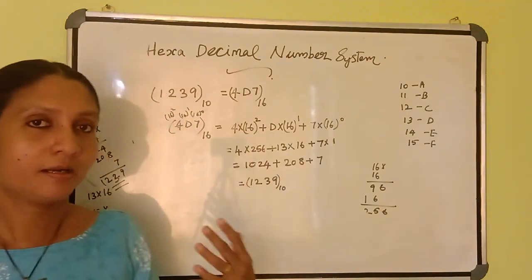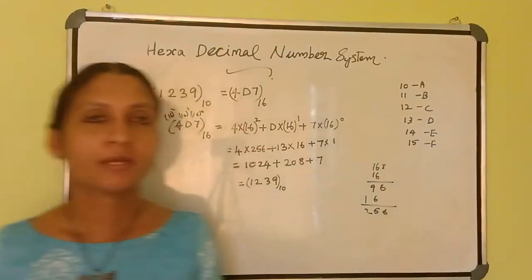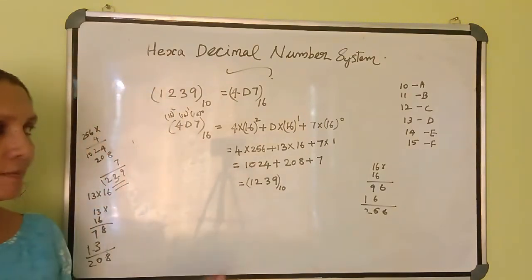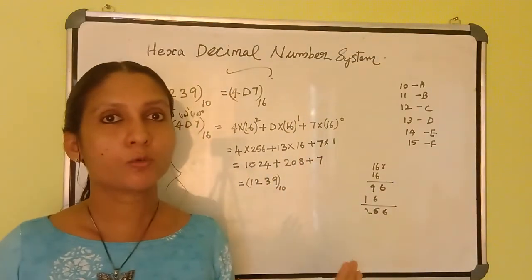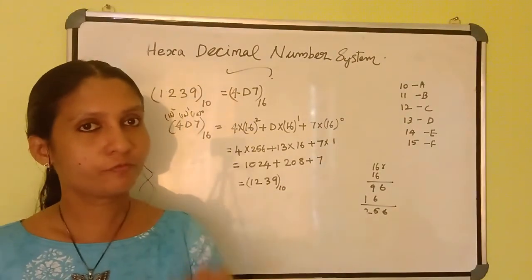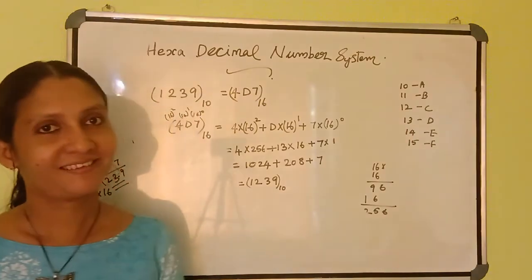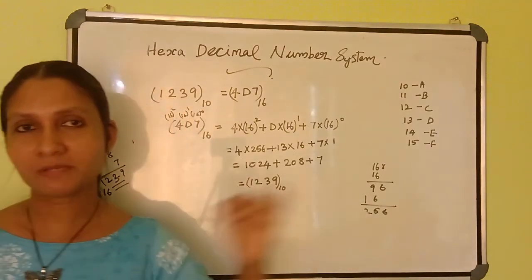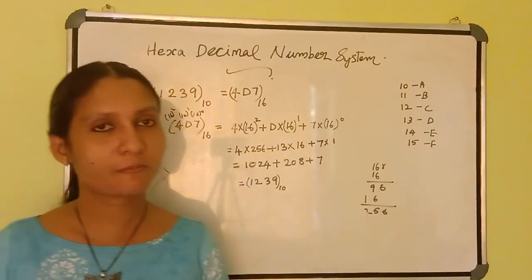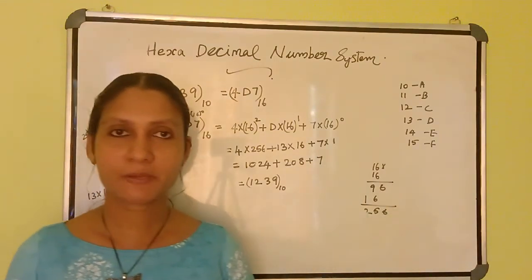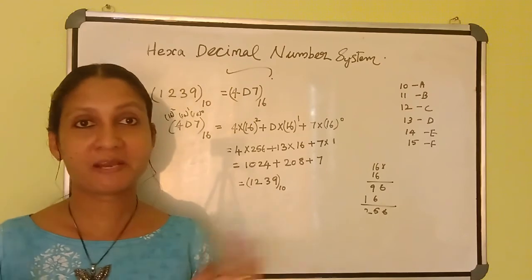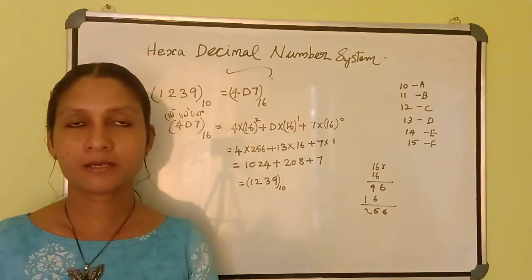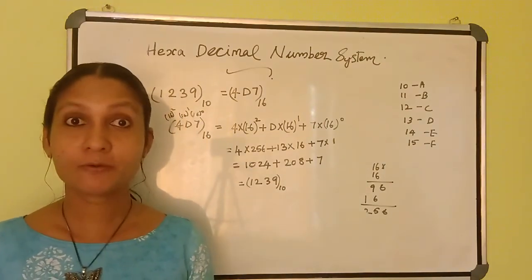This is the way we can convert decimal to hexadecimal and hexadecimal to decimal. In this number system, we are using 0 to 9 digits and 10 to 15 represented using the letters A to F, and 16 is the base. The different number systems we studied are: first, decimal number system with base 10; second, binary number system with base 2; third, octal number system with base 8; and the last one is hexadecimal number system with base 16. I think you all understand the different types of number systems. I will display a table about these different number systems that you can use for reference.